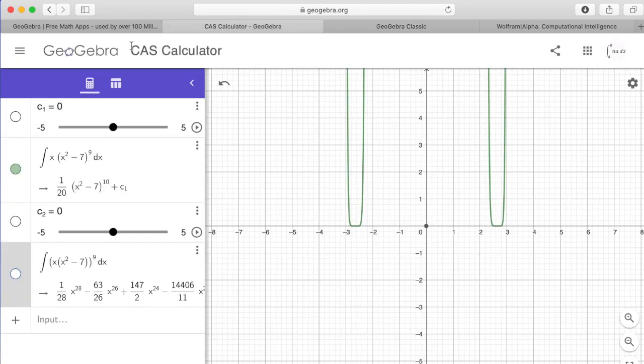You can absolutely use the standard GeoGebra CAS calculator. You just have to be very careful with how you enter your functions and double-check that they got entered properly beforehand. Otherwise, you could end up with the wrong integral.